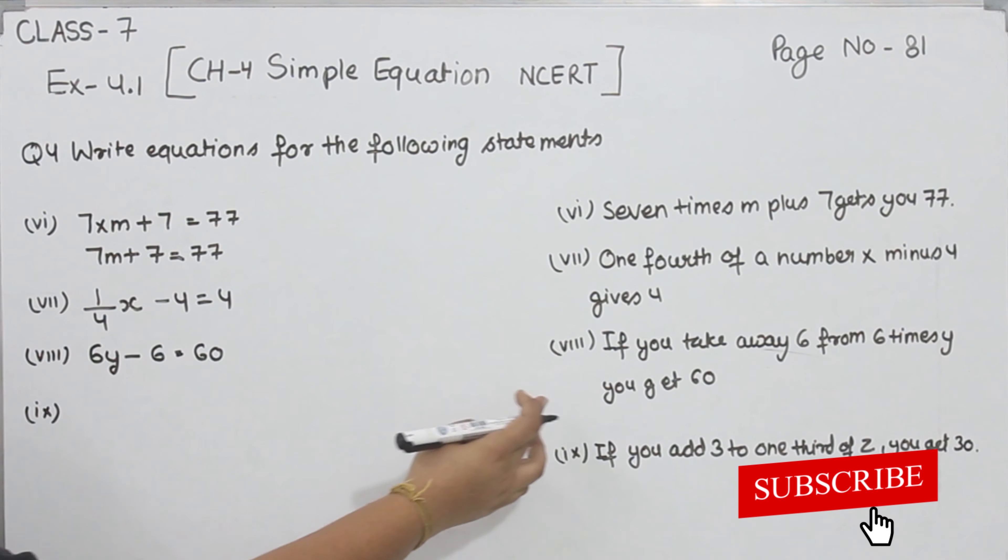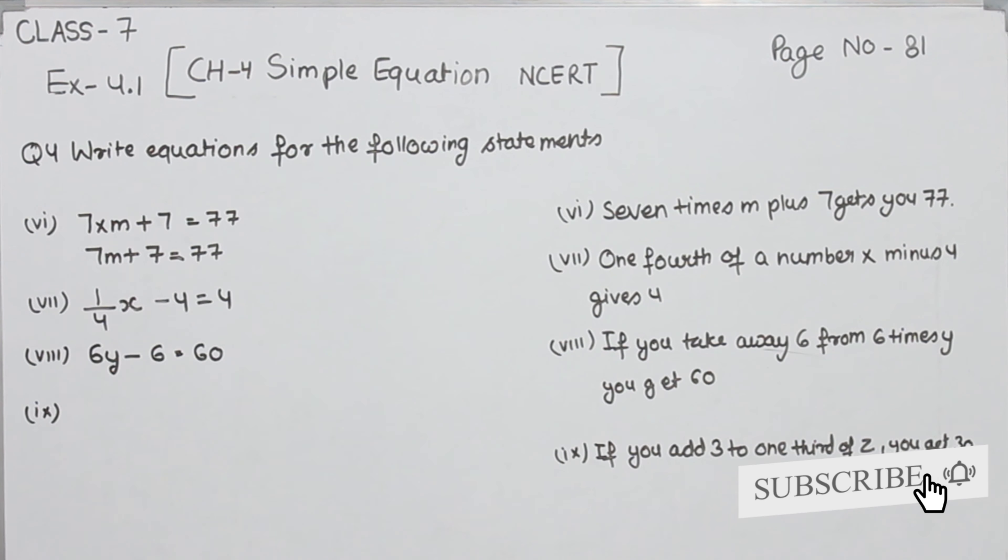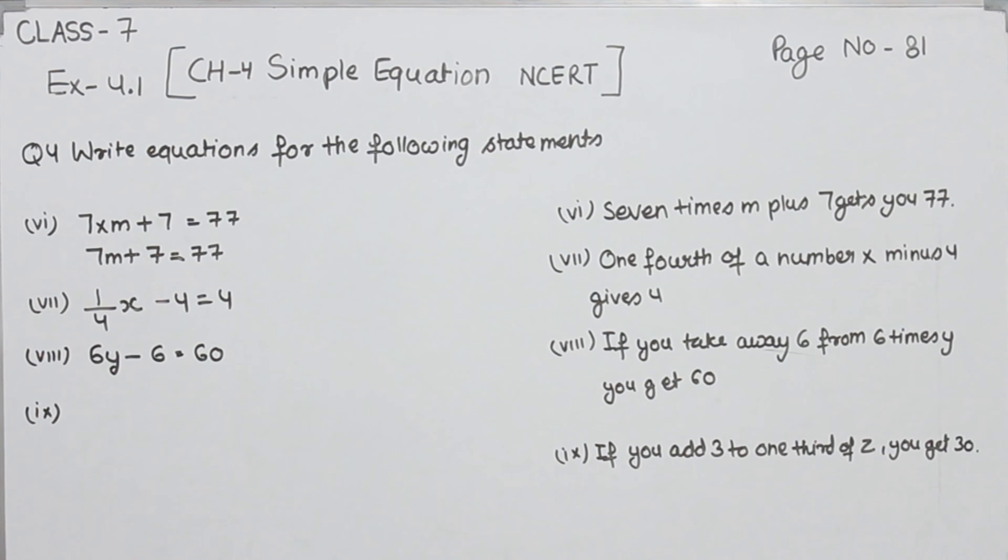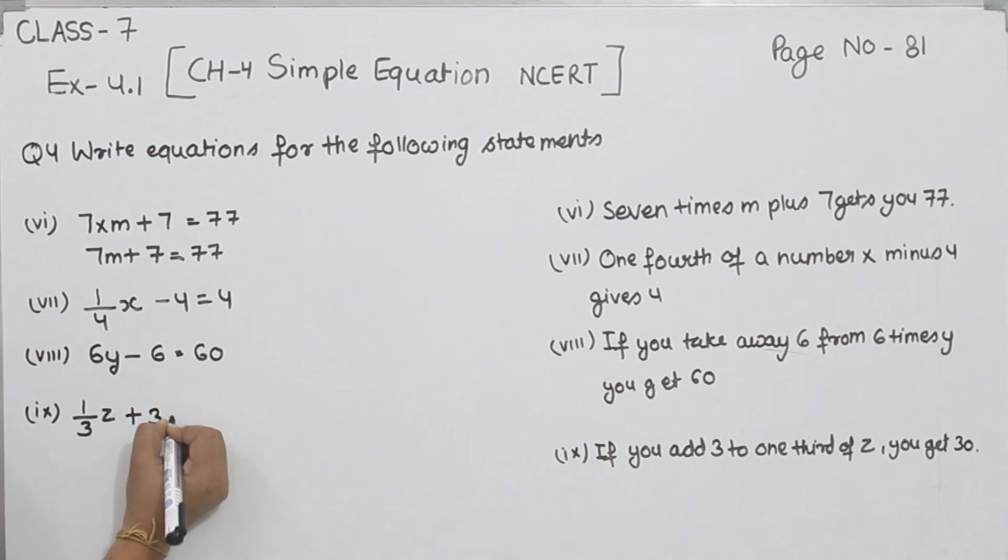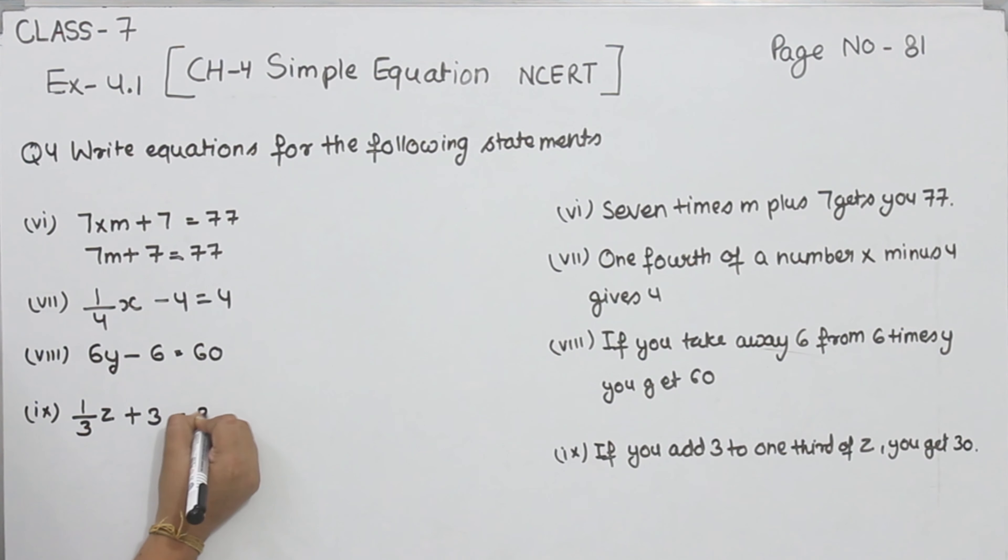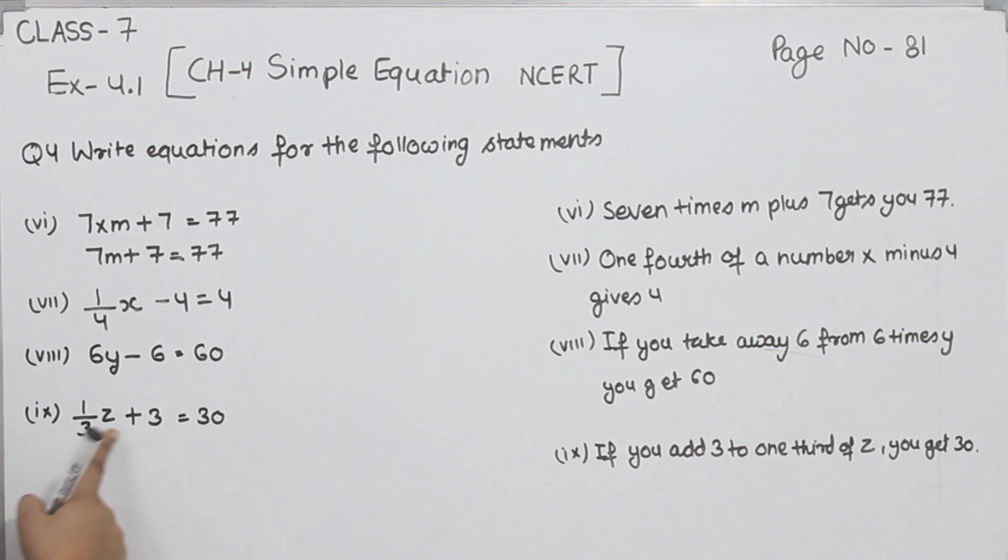Part 9. If you add 3 to one-third of z, first of all one-third of z, then we have to add 3, plus 3 is equal to 30. We get 30, so this is the statement: one-third of z plus 3 is equal to 30. This is question number 4.